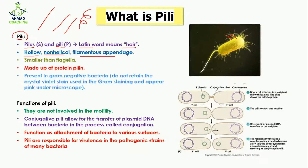In this diagram you can see the large structure is actually flagella, while these smaller structures are hollow appendages known as pili — they are smaller than flagella. The pili are actually made up of a protein known as pilin, so the word pilin comes from pili, which helps you easily remember it.